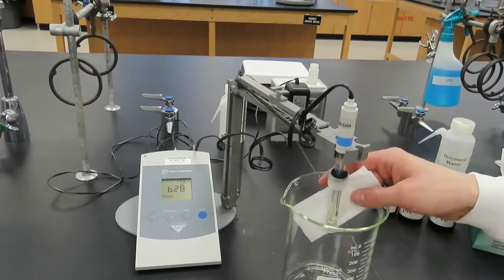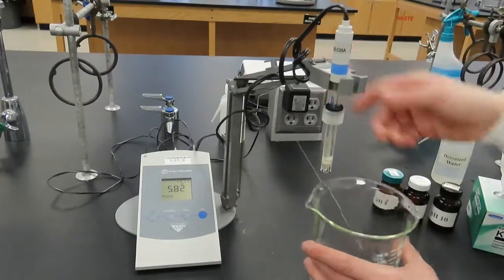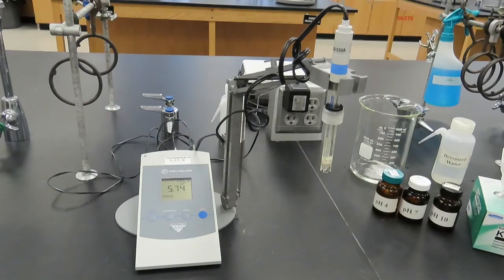What can we conclude from the pH readings of these three unknown solutions? Solutions A and B may be the same solution because they had essentially the same pH, but solution C is definitely a different solution from solutions A and B because of its much higher pH.